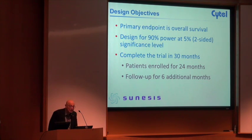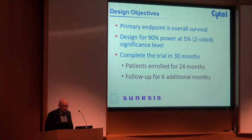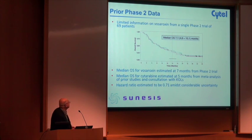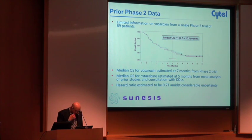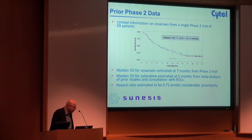The design objective is overall survival. It was designed for 90% power with an alpha of 0.05, two-sided. One of the goals was to complete the trial in 30 months — with 24 months of enrollment and an additional six months of follow-up. The issue was that there had been no trial of this treatment arm versus the standard of care.